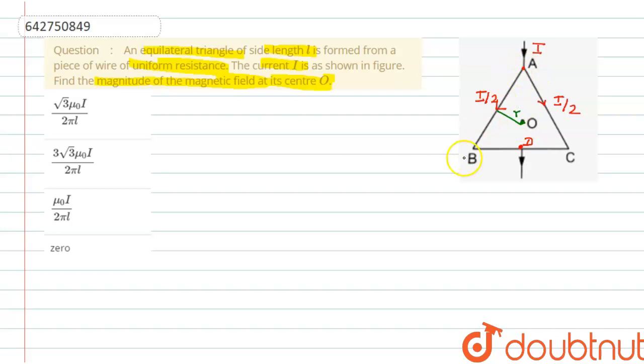Let us take B_AB, that is given by mu naught I by 2 divided by 2 pi R, because the point O is exactly at the middle of A and B. Now the magnetic field due to the line element BD is given as B_BD is equal to mu naught I by 2 divided by 4 pi R.